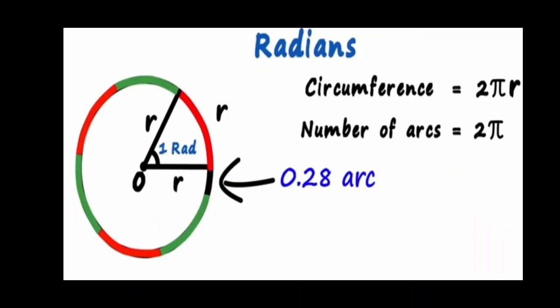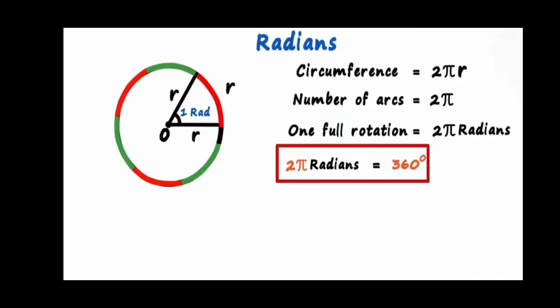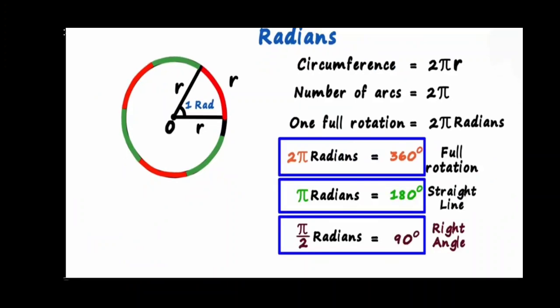That is, 6 arcs equal to the radius plus 0.28 times the radius of the circle, giving us 6.28 arcs in a circle. There are 360 degrees in a complete circle and 2π radians in a complete circle. Since there are 2π arcs, the angle subtended by 2π arcs equals 2π radians, so 2π radians equals 360 degrees.